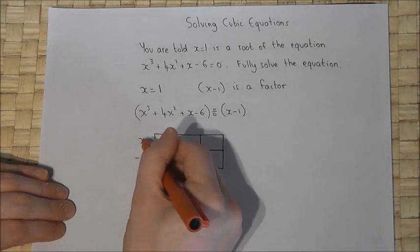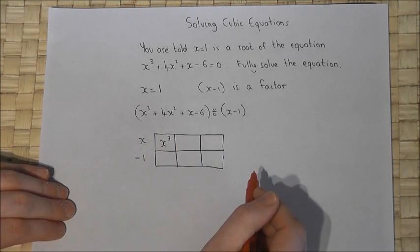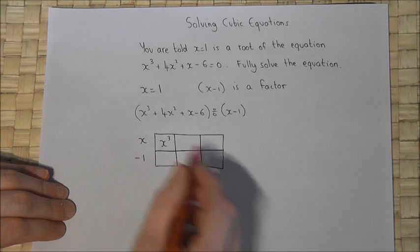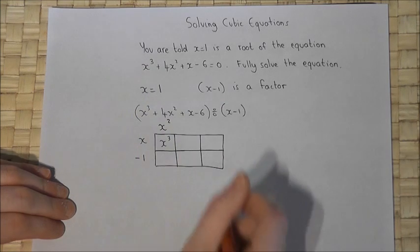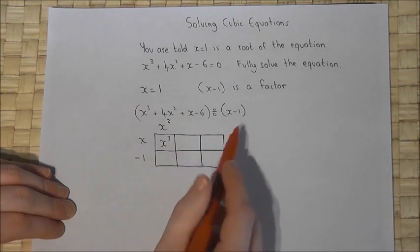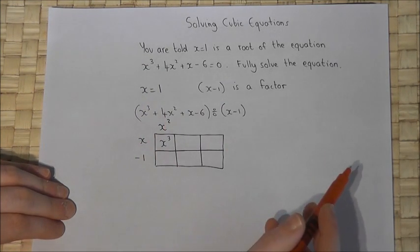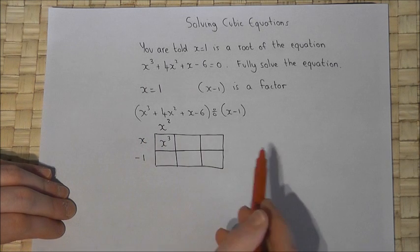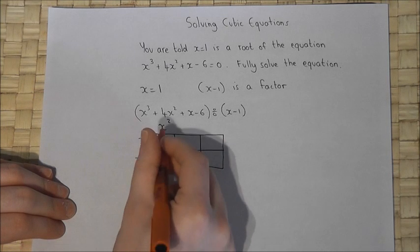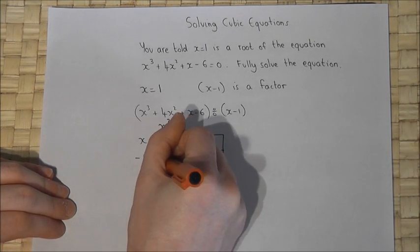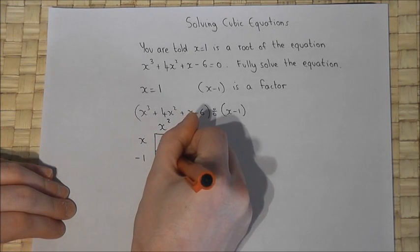I want an x cubed, so I put an x cubed in the top left of the grid. The question is, what two terms will multiply to work out x cubed? Well, I've got an x, so I need an x squared. x times x squared is x cubed. But there's a minus 1 there, and minus 1 times x squared is minus x squared.